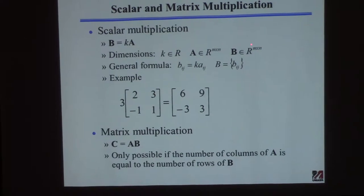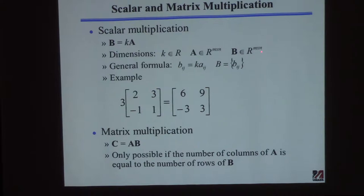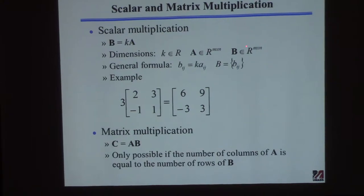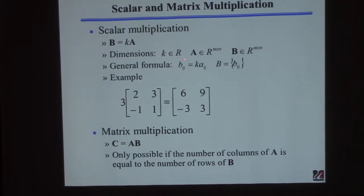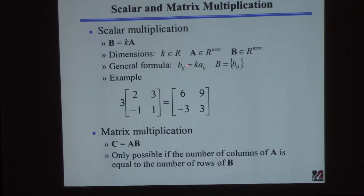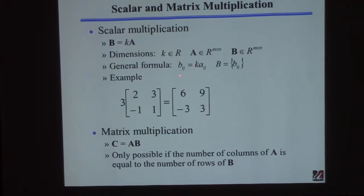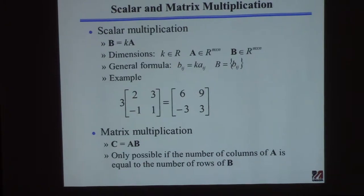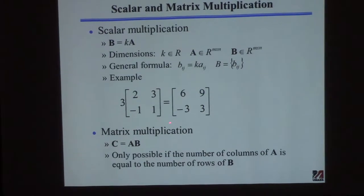By definition, B has to have the same dimension as A, so it'll also have M rows and N columns of real numbers. To tell you how to get matrix B: if you want a particular element of B at position I, J — where I is the row and J is the column — take the scalar K and multiply it times the corresponding element A at I, J.